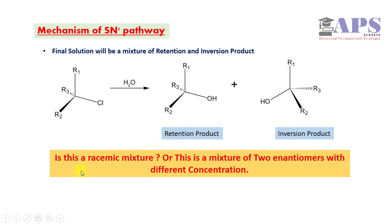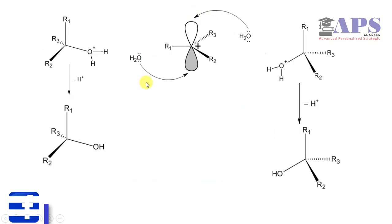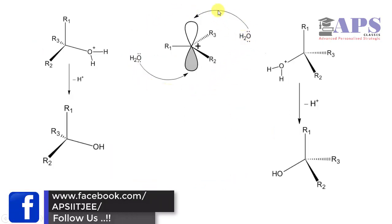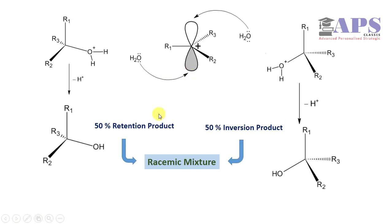Now the question is, is this a racemic mixture or a mixture of two enantiomers with different concentration? Water can approach from above the plane or from below the plane with equal probability. That's why there is a chance of 50% retention product and 50% inversion product, eventually becoming a racemic mixture.